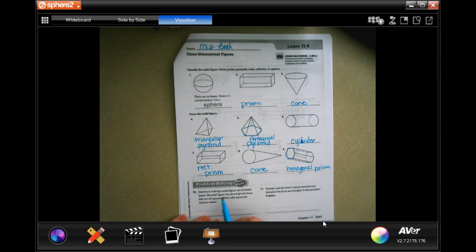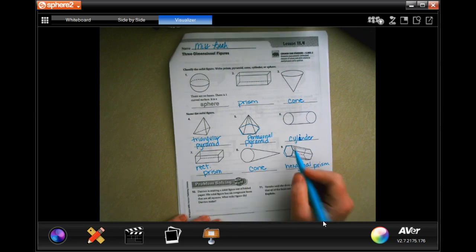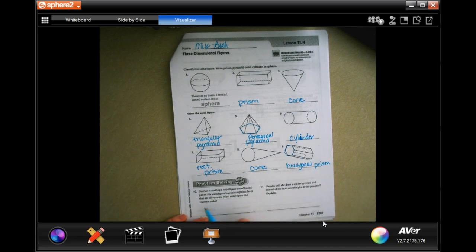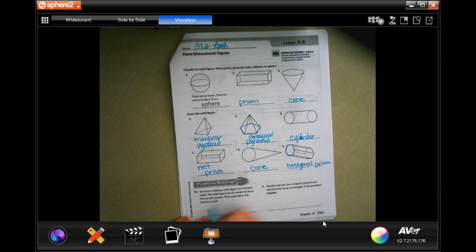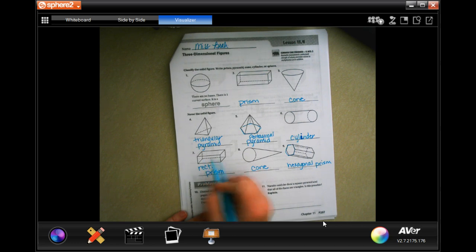All right, Darian is making a solid figure out of folded paper. His solid figure has six congruent faces, sorry, that are all squares. What solid figure did Darian make? Well, if he made six congruent faces, so it's just like this, but they're all squares, which means it would just be shorter, which would make it a cube.